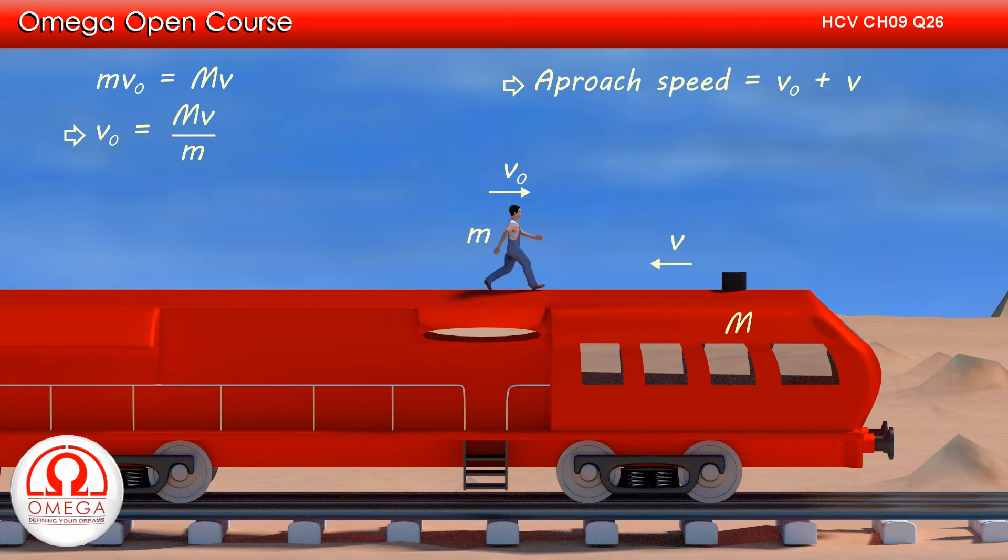Approach speed is the speed of man with respect to the railroad car. Since both are moving in opposite directions, the relative speed is v0 plus v. Putting the value of v0, we get approach speed is equal to capital M v divided by m plus v, or v into 1 plus capital M by m. This is our answer.